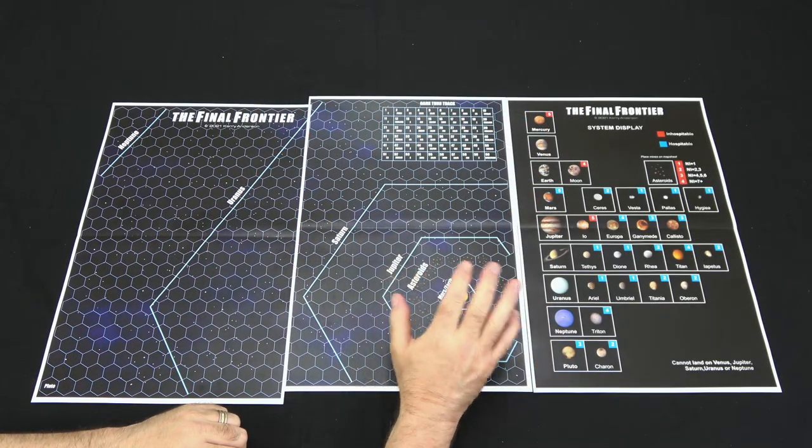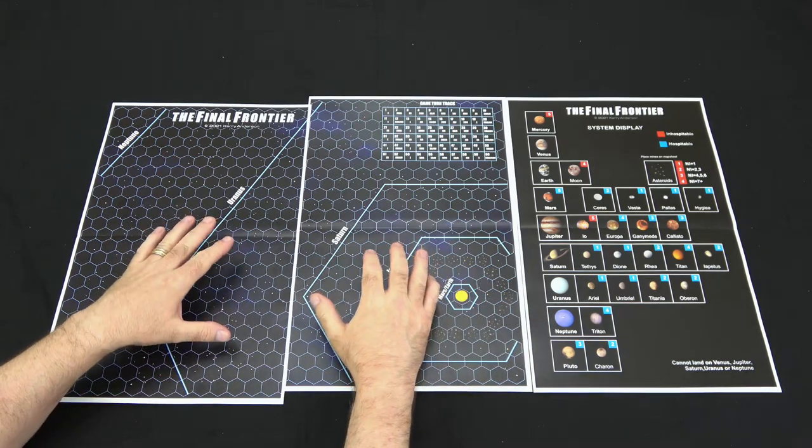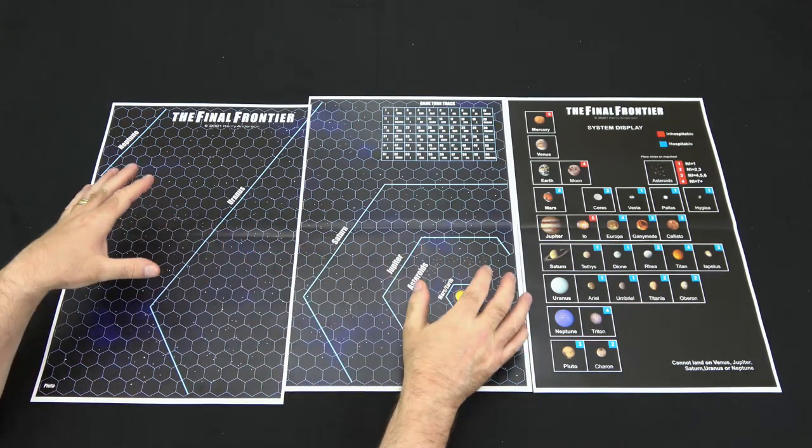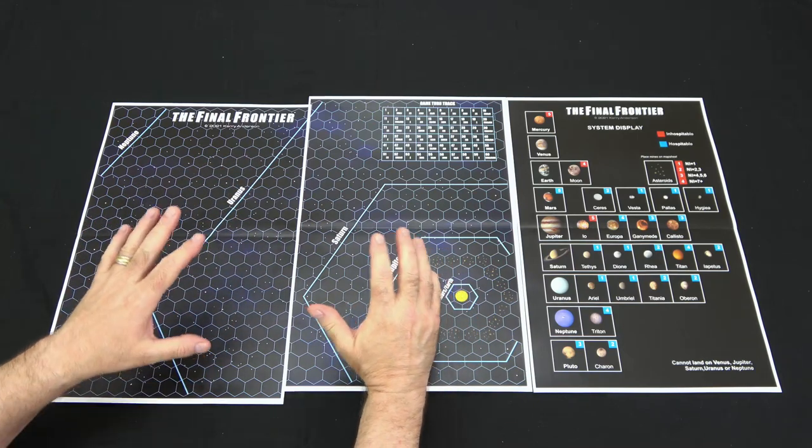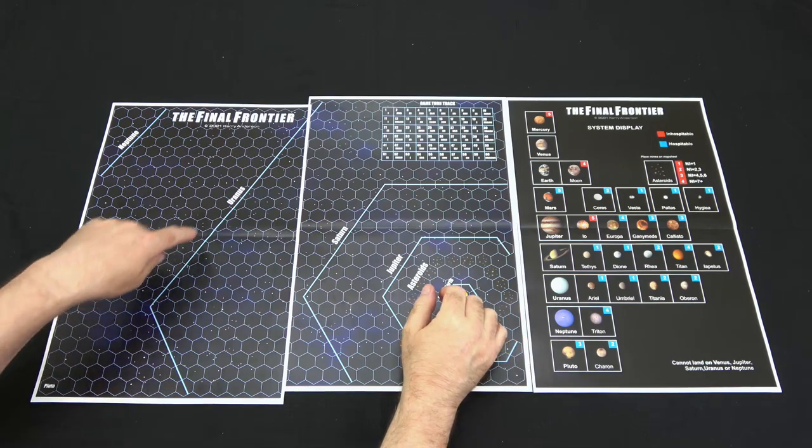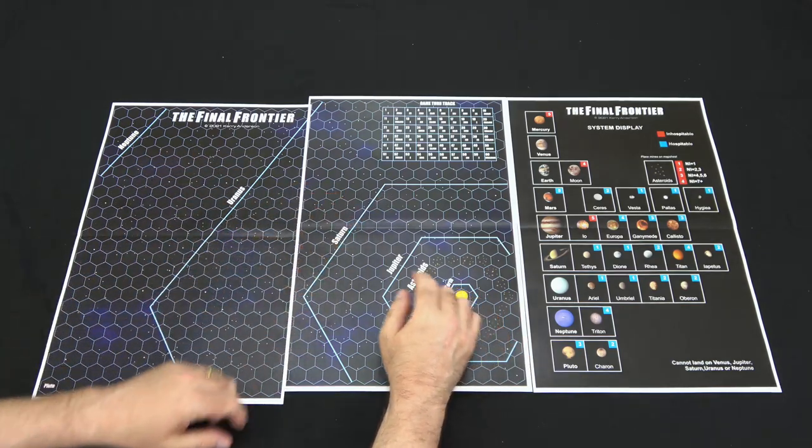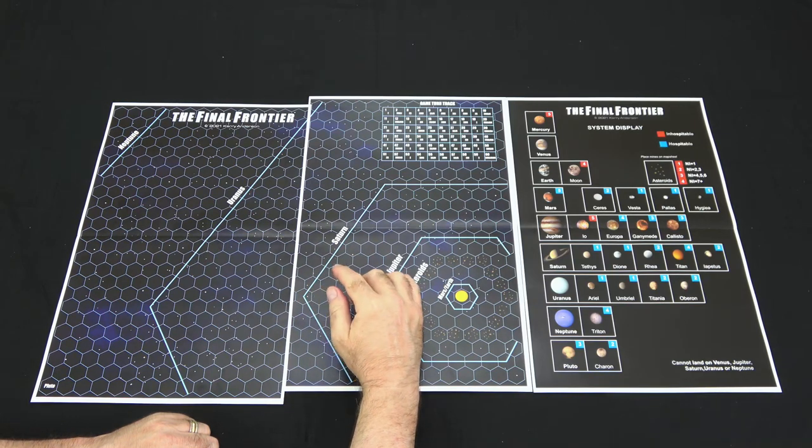And here's a look at the two maps and the system display that you'll get with the game. You're going to take these two maps, put them together, and that's going to create the solar system map. You can cut off the side edge there, the white parts, that way they'll match up a little bit nicer. The orbital paths for each of the planets are these lines here, and the planets will be out on these lines and will move every turn one space along in a clockwise direction.